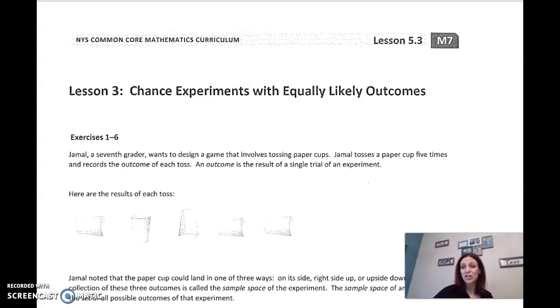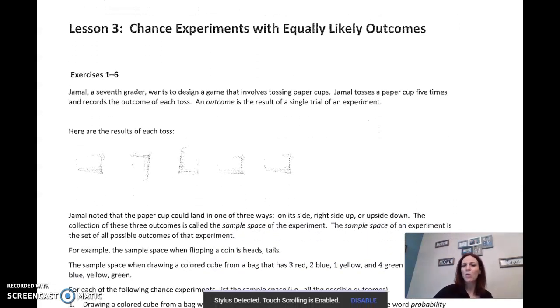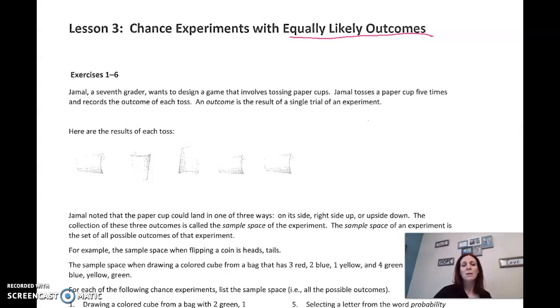Lesson three in module five is on chance experiments with equally likely outcomes. We're going to talk about what it means to be an outcome of a chance experiment. There's some important terminology here. The concept hopefully isn't too hard, so don't overthink it, but we need to make sure we understand what we're talking about.